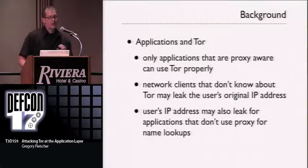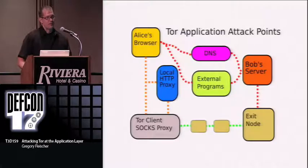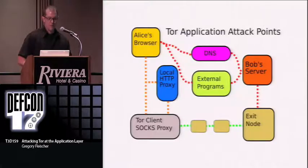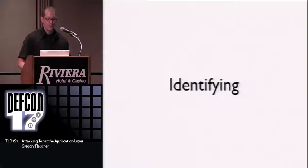Only specific applications that are aware of Tor — either through the HTTP proxy or the SOCKS proxy — are going to be able to use it without leaking information about you, either through your IP address or through DNS requests. We've now added DNS and external programs as additional attack points in our diagram.